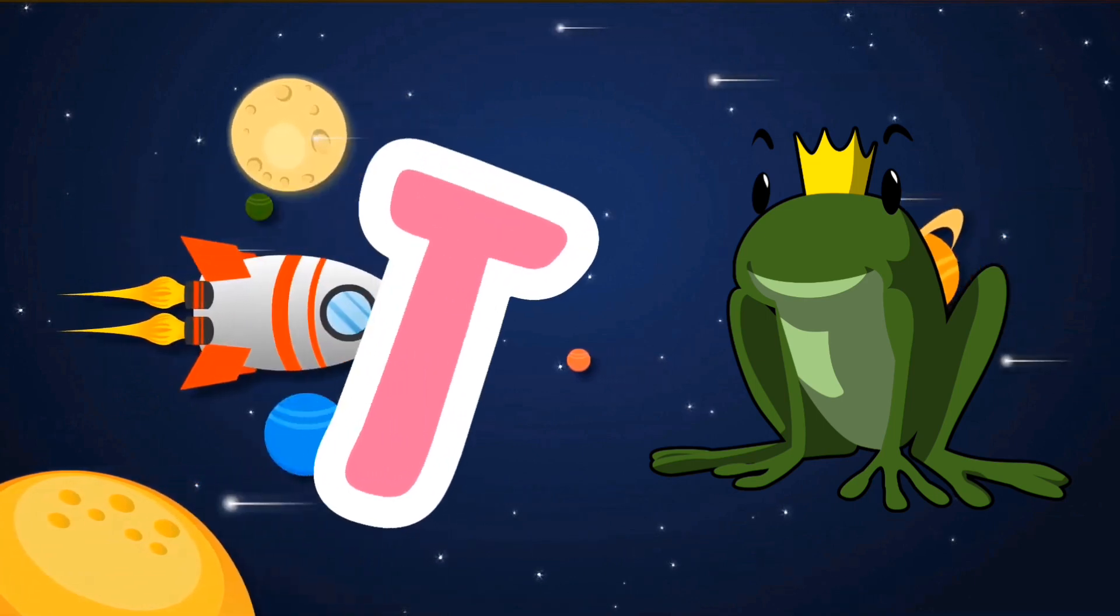Q is for queen, q-q-queen. R is for rabbit, r-r-rabbit. S is for sun, s-s-sun. T is for toad, t-t-toad.